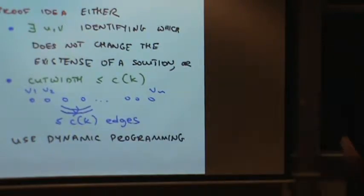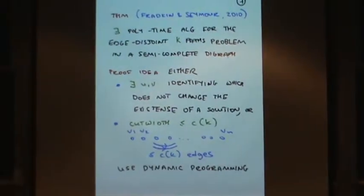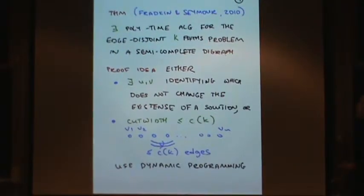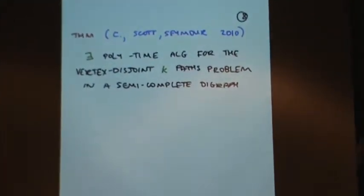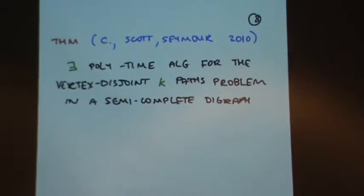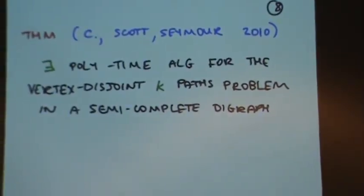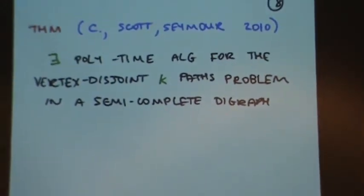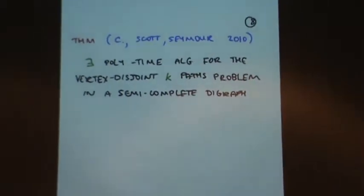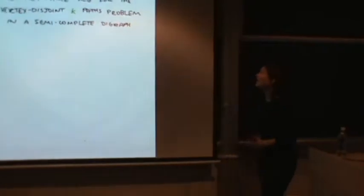So that's that algorithm. Now what about the vertex disjoint problem? That's the main result in my talk. We can, with Alex Scott and Paul Seymour, solve the vertex disjoint problem in polynomial time. The polynomial is pretty big, it's like n to the 27k cubed.